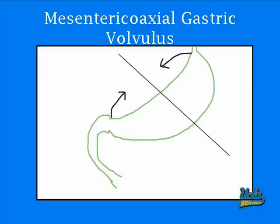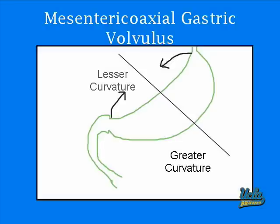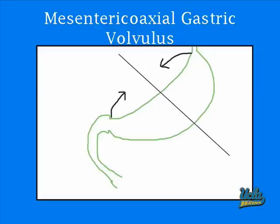Moving on from organoaxial gastric volvulus, we will now talk about mesentericoaxial gastric volvulus. From the enlarged diagram here, we can see the stomach is still in green, and the axis on which the stomach twists bisects the greater curvature and the lesser curvature. From the arrows, we see that the antrum moves to a superior and anterior position, which is a contradiction from what it was before, which is posterior and inferior.